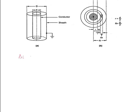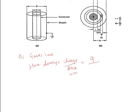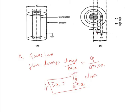According to Gauss's law, flux density is equal to charge upon area. Here the charge is Q and the area at point P is 2πx, so the flux density becomes Q/(2πx), and it is denoted by Dx. So Dx = Q/(2πx) coulombs per meter square.